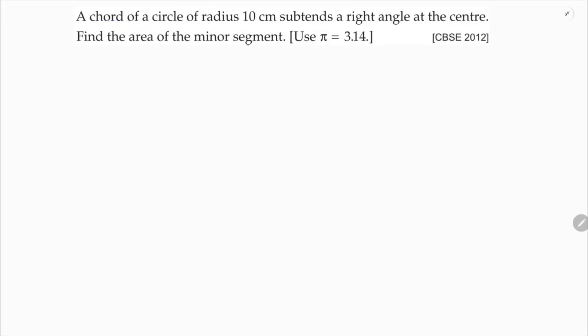A chord of a circle of radius 10 centimeters subtends a right angle at the center. Find the area of the minor segment. Use π equals 3.14.